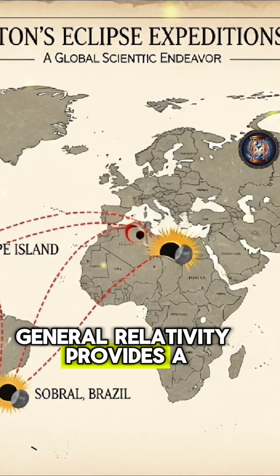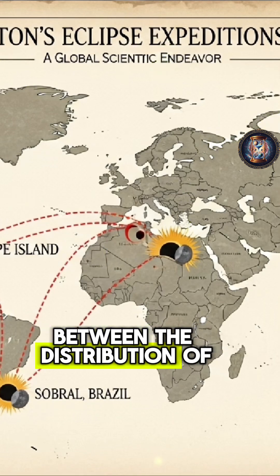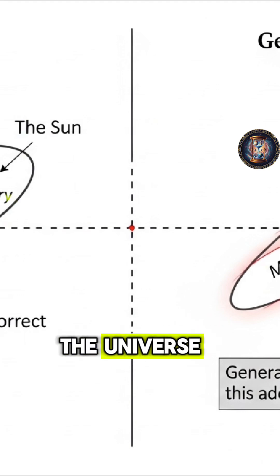General relativity provides a complex field equation that describes the relationship between the distribution of mass and energy in the universe and the curvature of spacetime.